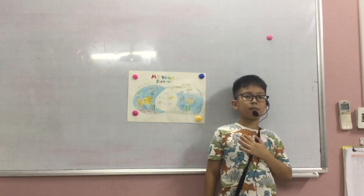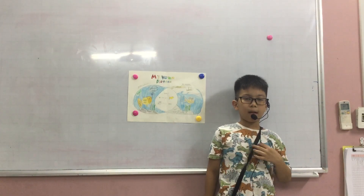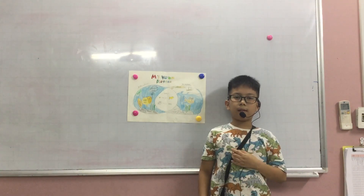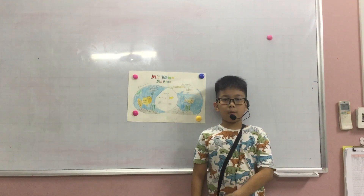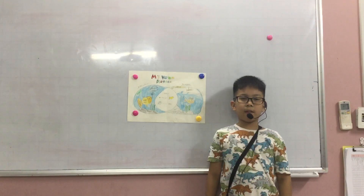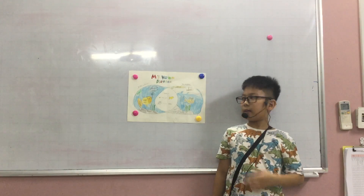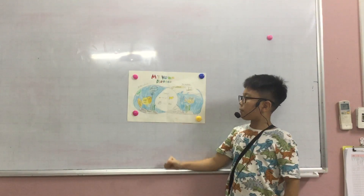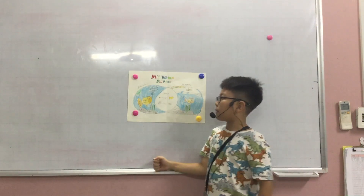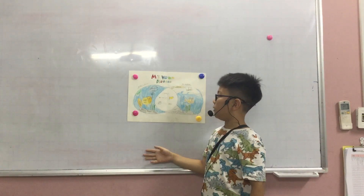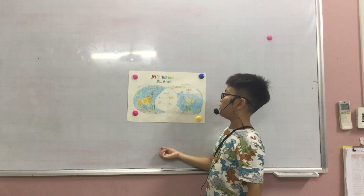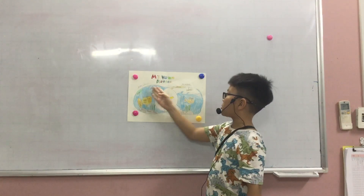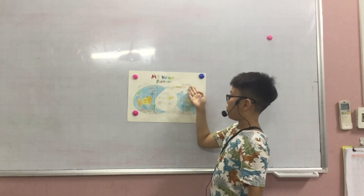Hello everyone, my name is Tom. I am 9 years old in class DRP and today I am going to tell you about my brain diagram. My brain diagram will talk about the difference and similar about the goldfish and the colorful fish.